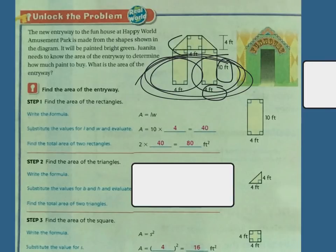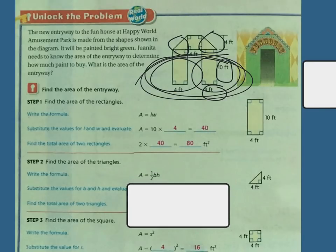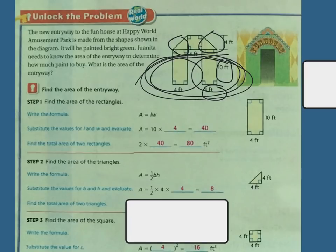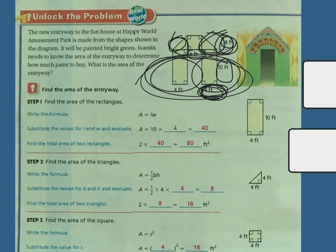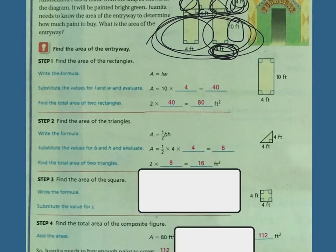Now I need to find the area of these triangles. The formula is half base times height, or base times height divided by 2. Looking up here, I have 4 feet tall and 4 feet wide — right here it's showing 4 feet and right there is 4 feet. So it's going to be 4 times 4, which is 16, divided by 2, which is 8. And I have two triangles, so 8 plus 8 is 16 square feet.